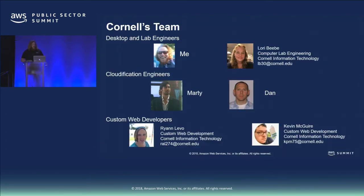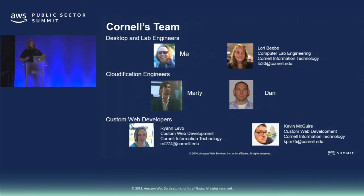This is our team. There is me and Lori Beebe — we're the front-facing people who gather business requirements, figure out what applications people want, get the configurations and installations, and do all the QA. We have Marty and Dan from the cloudification team who do all the Amazon stuff. We also have two web developers making a website portal where students can log in and see all the classes they have AppStream available for, as well as a way for on-campus technical service providers to upload their own packages and build their own AppStream, and for professors to schedule when they want things on and off to leverage scaling and save as much as possible.